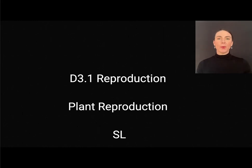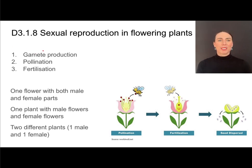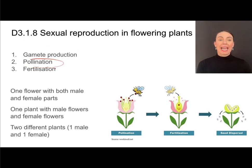This is D3.1 on reproduction and we'll be focusing on standard level content related to how plants reproduce. Not all plants reproduce sexually but for those that do there are three distinct parts in that process: producing gametes, pollination, and fertilization. We'll talk about all three of those.